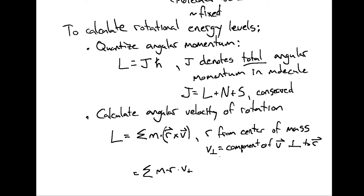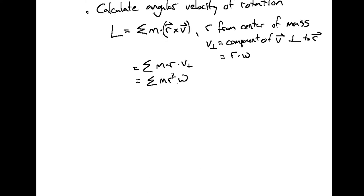Assuming solid body rotation — the rigid rotor model — v-perpendicular equals the distance from the center of mass times the angular velocity ω. This means angular momentum L = Σmr²ω. Because ω is not dependent on which particle we're talking about in rigid rotation, we can factor it out: angular momentum equals the moment of inertia I times ω, where the moment of inertia is I = Σmr².